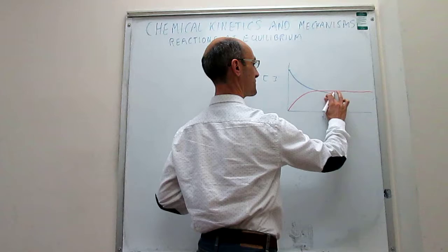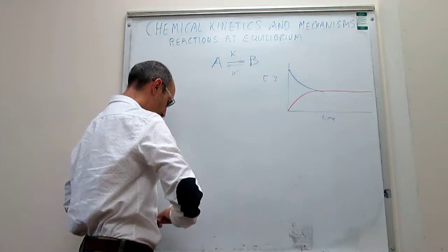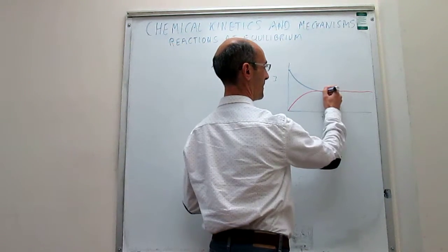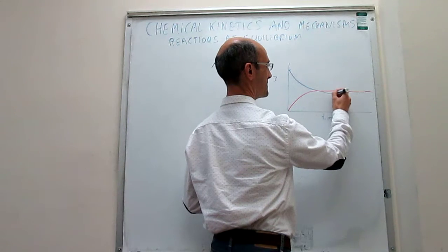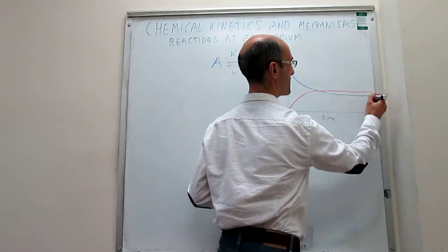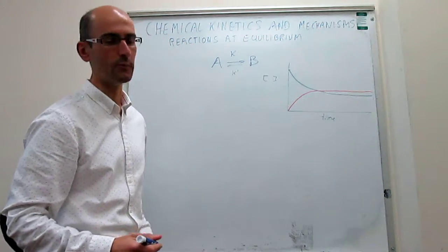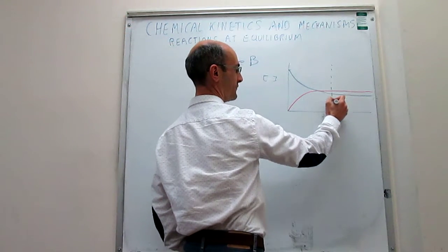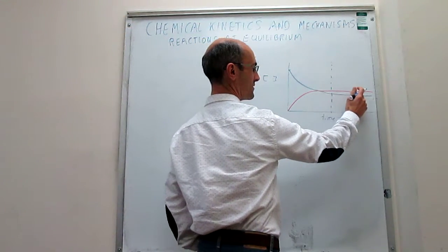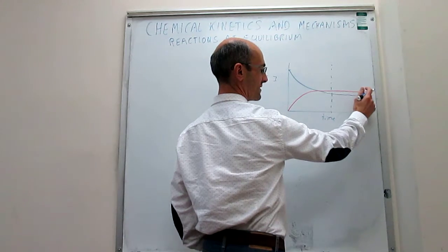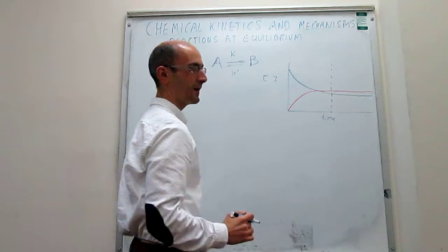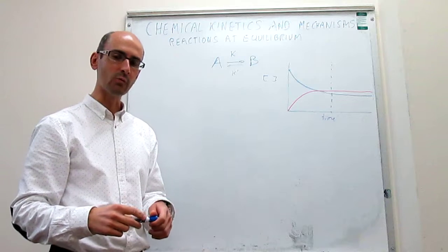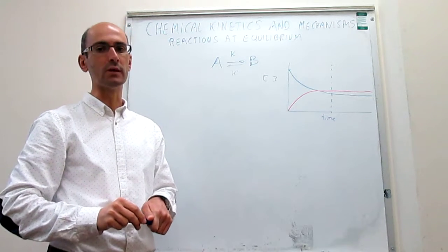If we draw this correctly, what you should observe is that after some time the concentrations of reagents and products do not change with time anymore. Right after this point you can see that the concentration of A doesn't change with time, and that's when we say that the reaction has reached equilibrium.